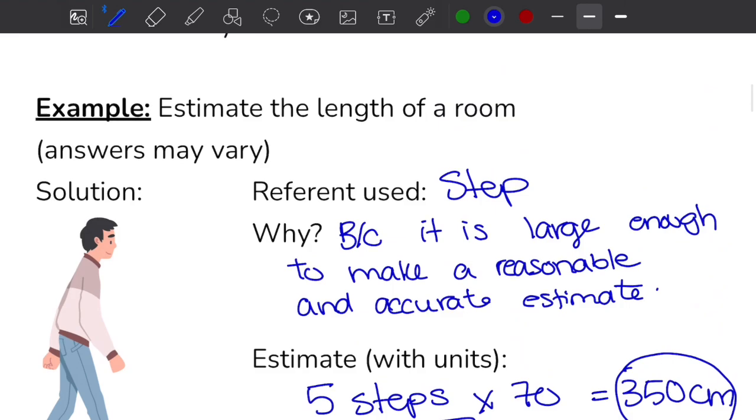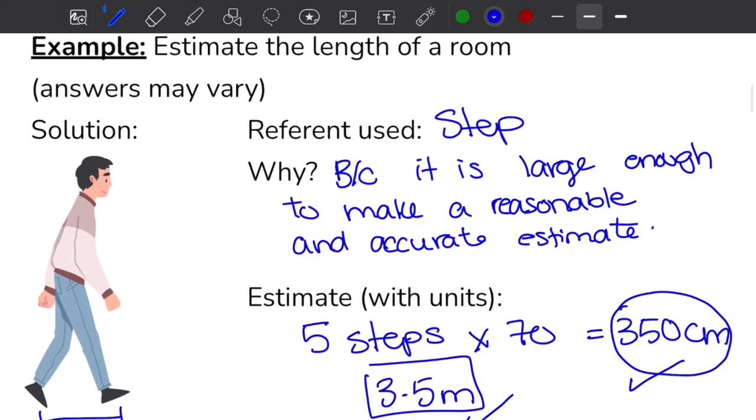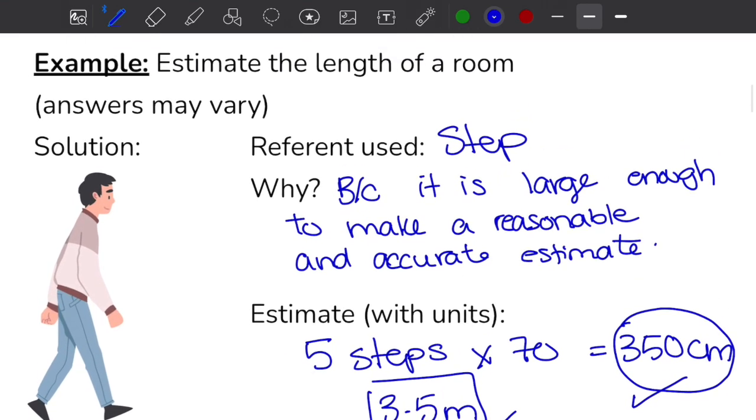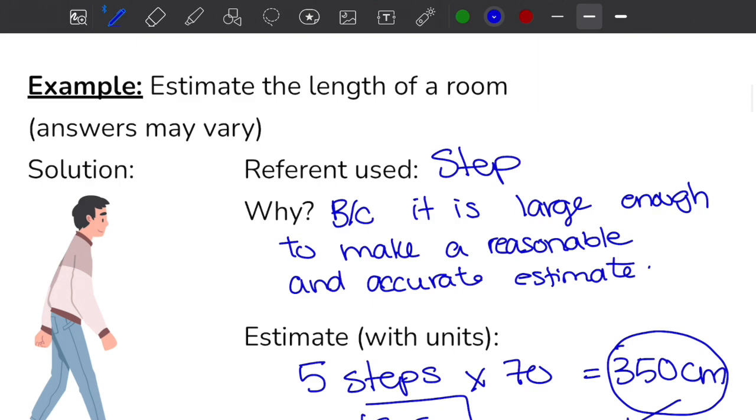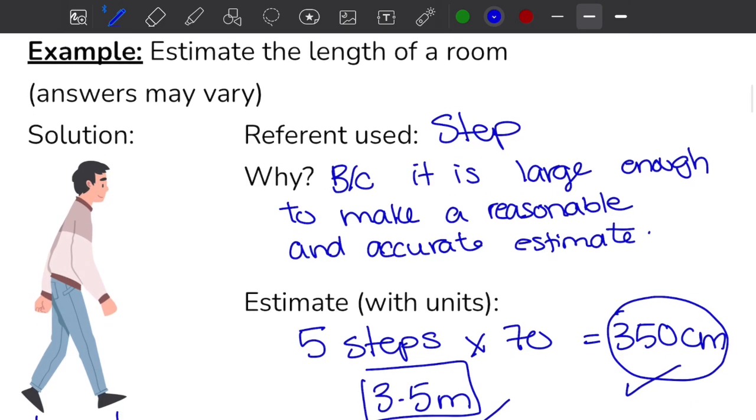Notice how this question did not specify what units to use. Some questions will say you have to use imperial units, some questions will say use metric. If they don't say anything you can pick whatever you like. However, the take-home message here is that you have to state what unit you used. It wouldn't make any sense if I said 350, like 350 what? Millimeters, centimeters, inches, yards, miles—huge difference.